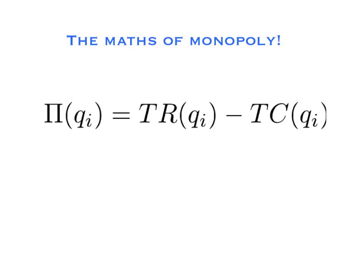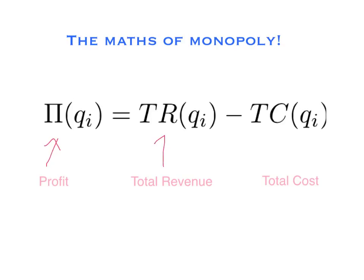Our starting point is just to remember that for any business, the profit of that business at a given level of output Q for that business is simply the total revenue of the business minus the total cost of the business. So profit is simply total revenue minus total cost.